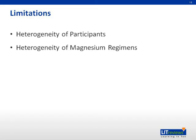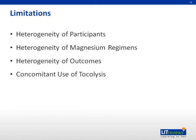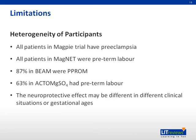Four major limitations were identified in this paper: heterogeneity of participants, regimens, and outcomes, as well as the concomitant use of tocolysis. The studies are clinically heterogeneous in patient selection and characteristics. All patients in the MAGPIE trial were enrolled with a diagnosis of preeclampsia; all patients of the MAGNEC trial had preterm labor; 87% of patients in the BEAM trial had PPROM; and 63% of those in ACTO magnesium sulfate had preterm labor. Different maternal diseases and intrauterine environments leading to preterm delivery — such as premature rupture of membrane and intrauterine infection and inflammation — have been shown to modify the risk of cerebral palsy. It is possible that the impact of magnesium sulfate neuroprotection may differ according to the indication for preterm birth.